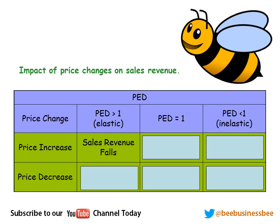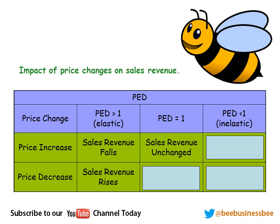For an elastic product, if we decrease the price, sales revenue will increase — because if we take the price down by 10%, we might get 20% more customers, so we make more money. If the PED is exactly 1 — neither elastic nor inelastic — and we increase the price by 10%, demand will fall by exactly 10%, so sales revenue stays exactly the same. The same applies if we decrease the price: nothing changes, because a 10% decrease in price gains exactly 10% more sales.